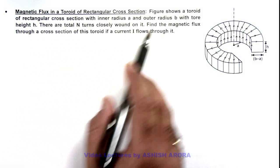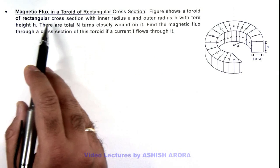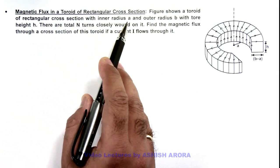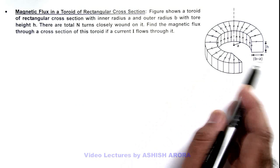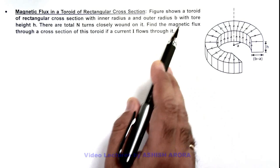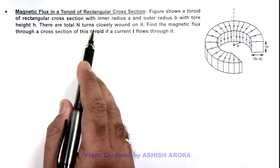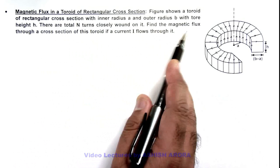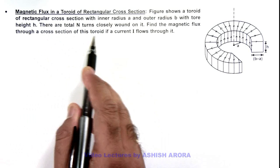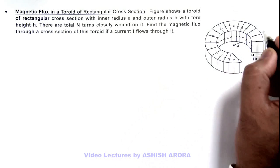Here you can see the figure shows a toroid of rectangular cross section with inner radius a and outer radius b, with tore height h. There are total N turns closely wound on it, and we are required to find the magnetic flux through a cross section of this toroid if a current I is flowing in it.